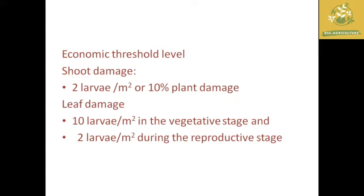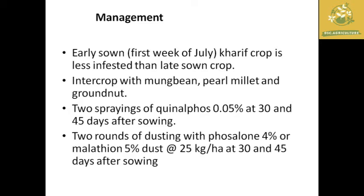The economic threshold level for shoot webber includes up to two larvae per meter square or 10 percent plant shoot damage. On leaf damage, 10 larvae per meter square in the vegetative stage and two larvae per meter square in the reproductive stage constitute the economic threshold level. If these levels are exceeded, we must move to management practices.